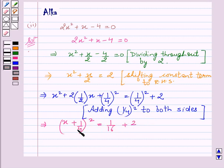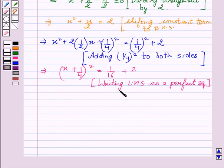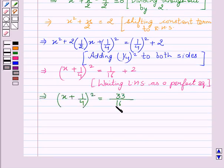Now, finding the common denominator, this can be written as (x + 1/4)² = 33/16, where 16 is the LCM.